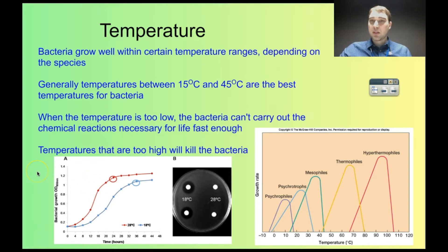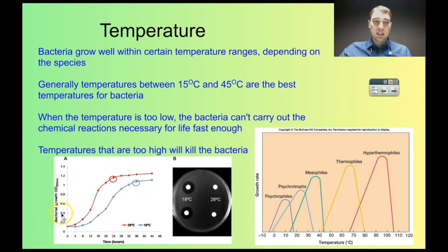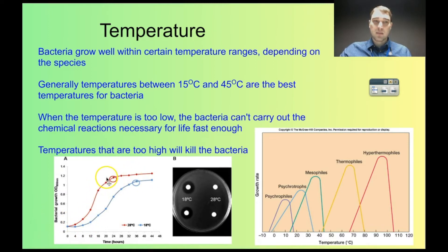Temperatures that are too high will kill bacteria because if it's too hot, enzymes stop working, proteins change shape, and the bacteria just don't survive. Here we've got a little experiment where they've grown bacteria at 28 degrees and at 18 degrees, measuring how many bacteria are growing. You can see that at 28 degrees the bacteria grow faster — we get to their peak earlier — and they're also producing more than they do at 18 degrees.